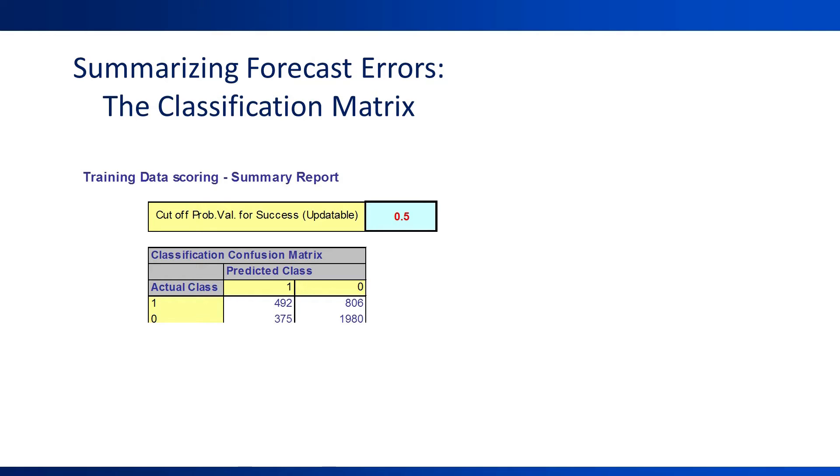In the rows we have the actual value, and in the columns we have the forecasted value. In this example, we see that the model correctly forecasted 492 rainy days and 1,980 non-rainy days. It was incorrect for the other days.